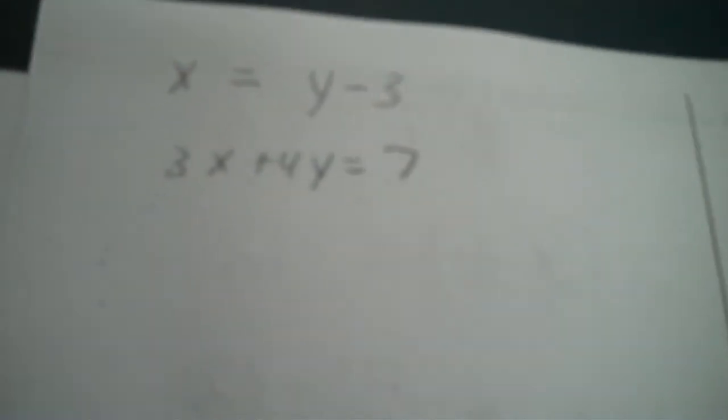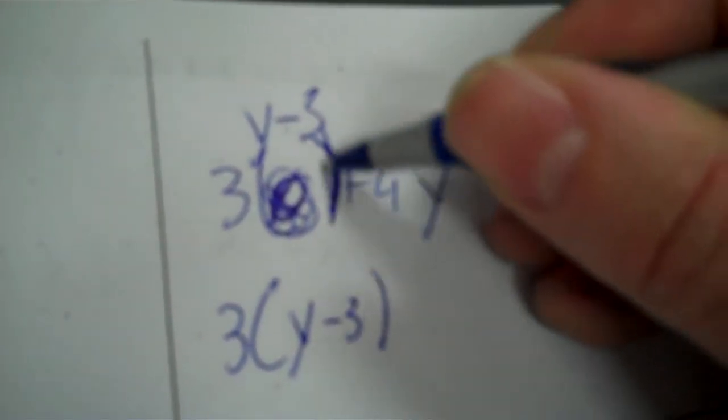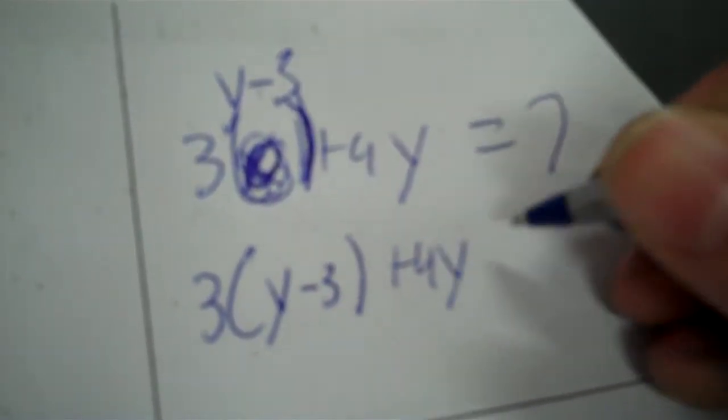Next one, third example. x equals y minus 3. And then 3x plus 4y equals 7. Find me my base variable. Right there. x. Write the off base. 3x plus 4y equals 7. x is your base. So your parentheses goes over the x. And you replace it with y minus 3. So 3, parentheses, y minus 3. And after the parentheses, don't just put equals 7. Because after the parentheses is closed, you have to plus the 4y. That was in the original.